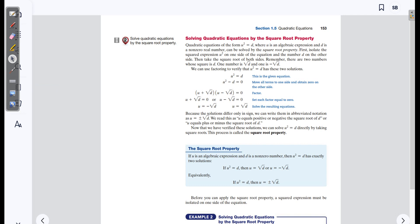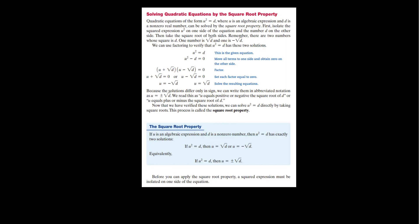Next up, we have the square root property. The square root property isn't anything mind-blowing — you basically just take the square roots of both sides. If u is an algebraic expression and d is a non-zero number, then u squared equals d has exactly two solutions: positive square root of d and negative square root of d, or equivalently u equals plus or minus the square root of d.